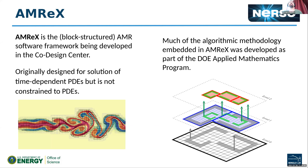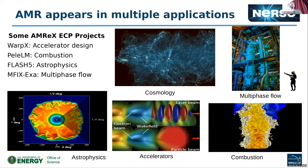Thing two is that the grids we break the domain into at a particular level are not related to each other on a different level in a strict parent-child hierarchy. Really, all we require is that the union of grids on a particular level be contained within the level below it. This flexibility of the software library has given rise to its application in lots of different fields. You know about the Einstein Toolkit, and there are lots of other applications now built on top of AMReX.